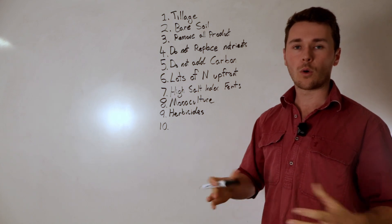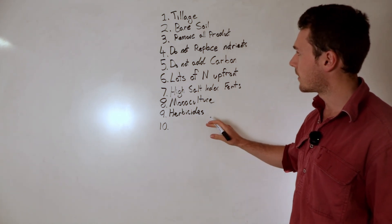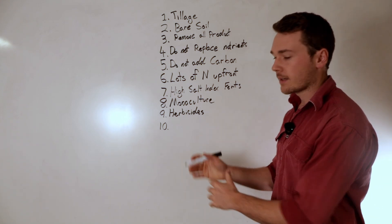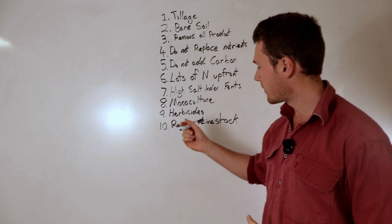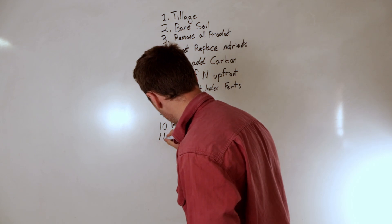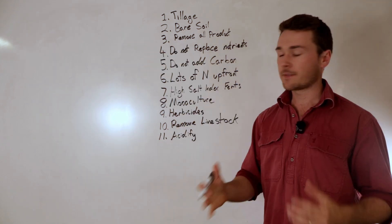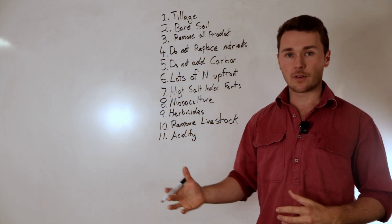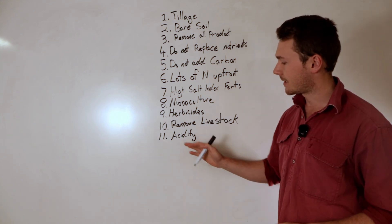And finally we're going to remove all livestock from the system. We don't want any livestock. We don't want that nutrient cycling. We don't want any animal impact on the land. And as a bonus one we can also acidify the soil. Specifically we don't want to lime. Making sure the soil is nice and acidic would be great for destroying the soil because nothing then can grow.